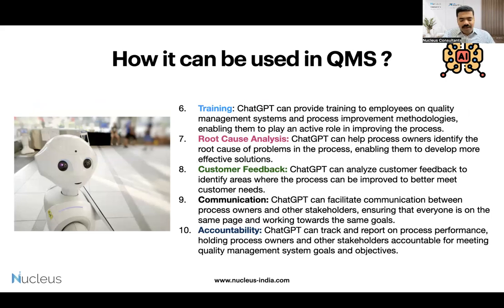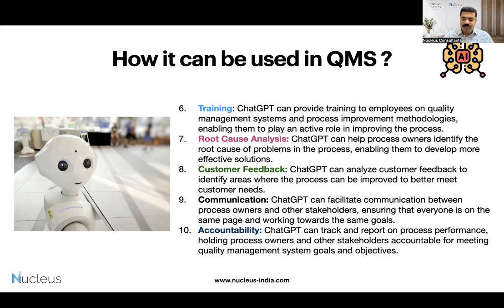It may play an active role. Root cause analysis — this particular session I'm going to do a demo on root cause analysis and how ChatGPT can help process owners in identifying root causes. Customer feedback — various organizations have already started using ChatGPT for customer feedback, as most bots are now enabled with ChatGPT options. Communication — it can facilitate communication between different process owners and stakeholders. Accountability — you can utilize it to ensure accountability on your QMS. These are some of the key areas where we can use ChatGPT.